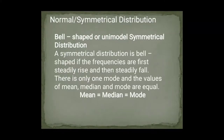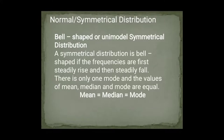If a bell-shaped or unimodal symmetrical distribution is present, then it is bell-shaped. When the frequency rises, it will rise, then it will fall. And the mean, median and mode are all equal. So we call this a normal or symmetrical distribution.